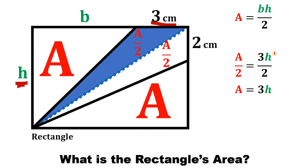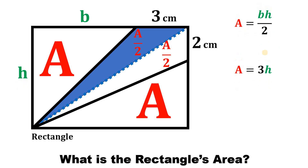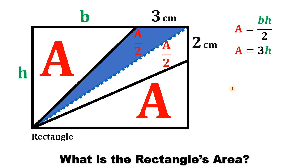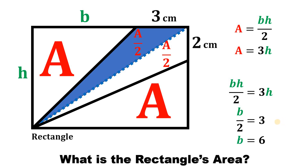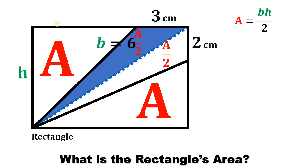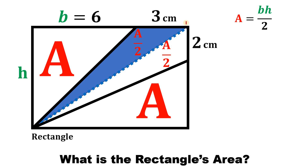On the first case, we said that A equals B times H over two. So we can say that B times H over two equals three times H. If we divide both sides by H, we get B over two equals three. Multiplying both sides by two, we get that B equals six. Therefore, the length of segment B equals six.